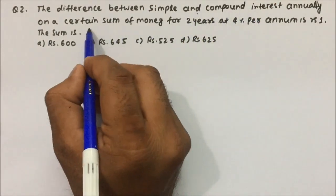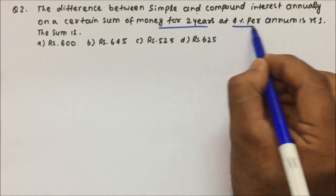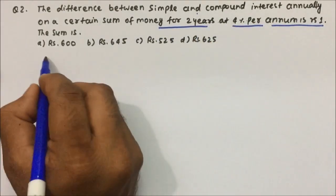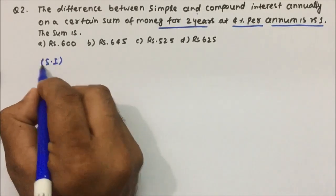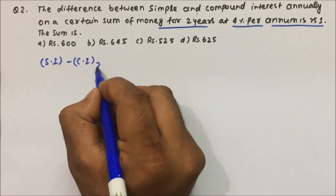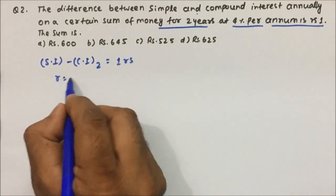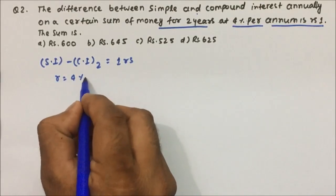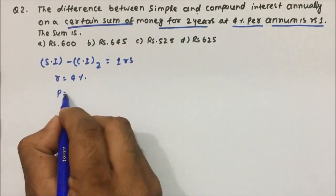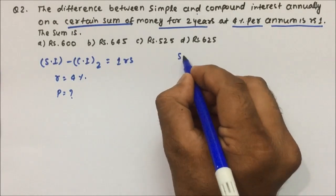Question number 2: the difference between simple interest and compound interest annually on a certain sum of money for 2 years at 4% per annum is rupees 1. So the difference for 2 years is 1 rupee, the rate is 4%, and they are asking for a certain sum, meaning they are asking for the principal.